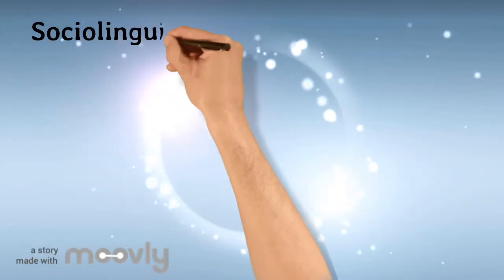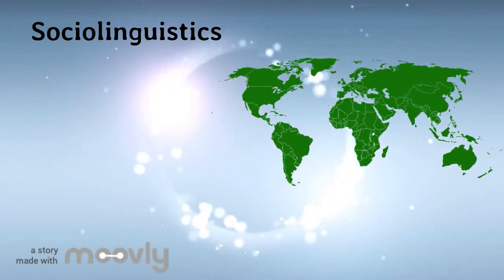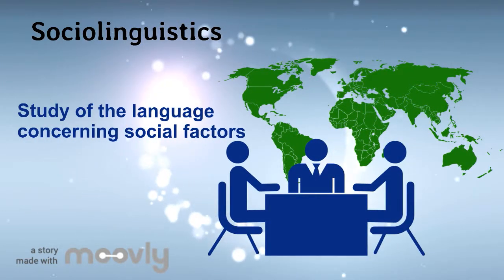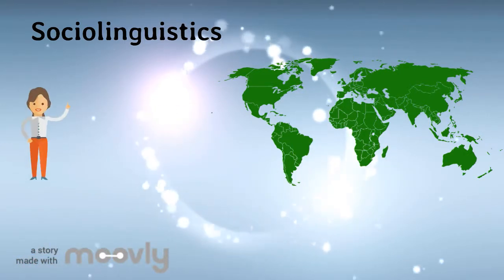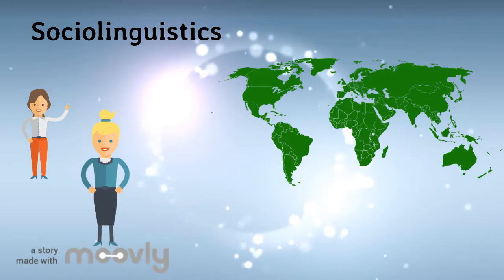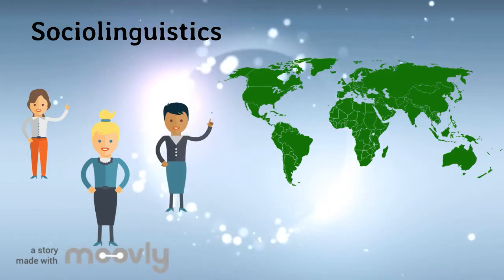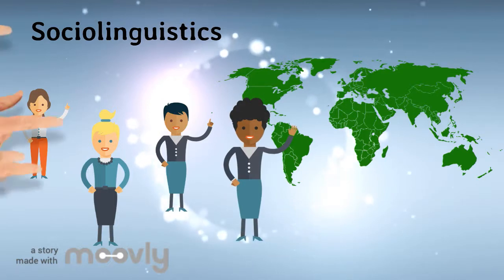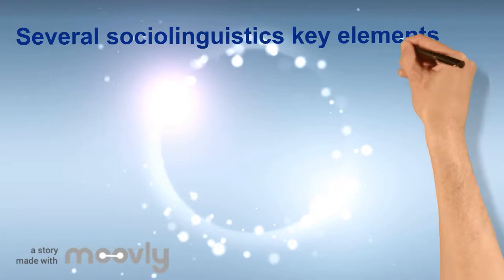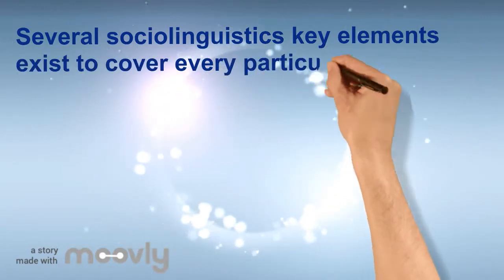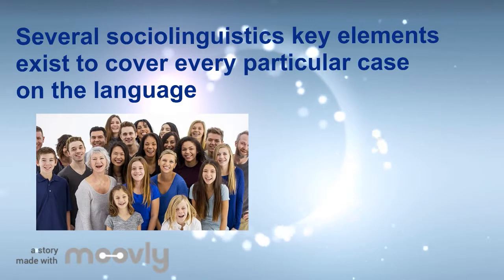Let's start with what sociolinguistics is. Sociolinguistics is the study of language concerning social factors. That is to say, depending on where you are or where you grew up, you will have a different perspective of the language, which will make you formulate different words. Several sociolinguistics key elements exist to cover every particular case in language, whether in social groups, age, or different environments.